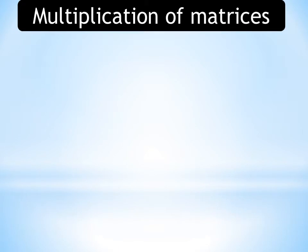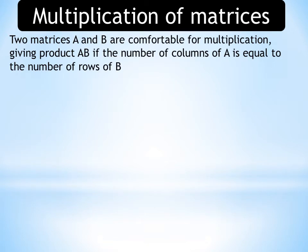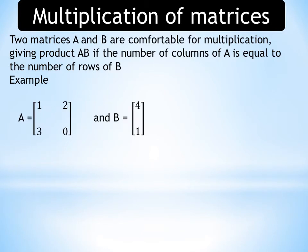Firstly, we will discuss the process for multiplication of matrices. If we have any two matrices, matrix A and matrix B, then these matrices can be multiplied if the number of columns of matrix A is equal to the number of rows of matrix B. Then we can say that matrix A and matrix B are compatible for each other. For example, we have matrix A with elements 1, 2, 3, 0 and matrix B with elements 4 and 1. Matrix A has two columns and matrix B has two rows, so these matrices can be multiplied.